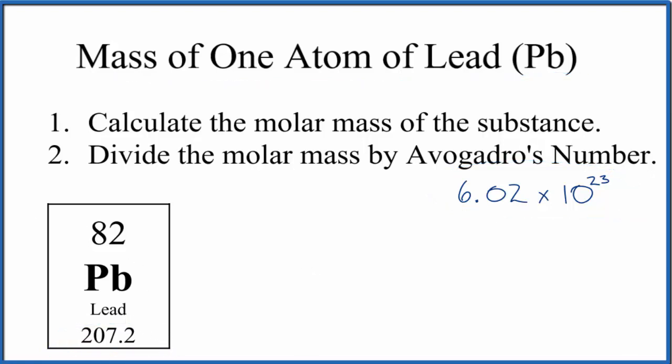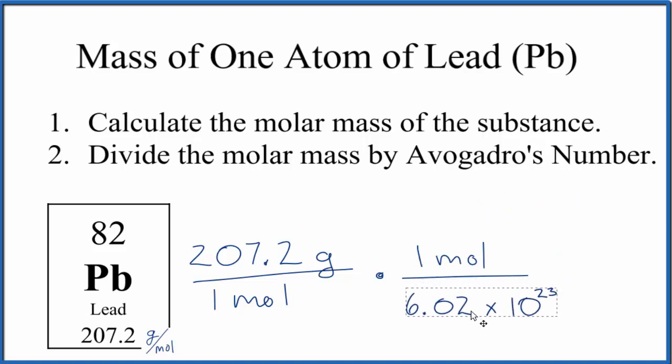You can think about the average atomic mass as having the units of grams per mole. So we have 207.2 grams per mole. We're going to multiply this by a conversion factor, because we know that one mole of any substance has Avogadro's number of particles.